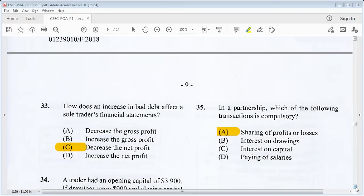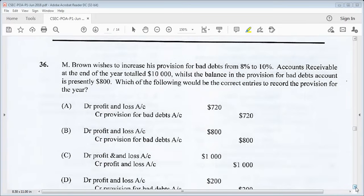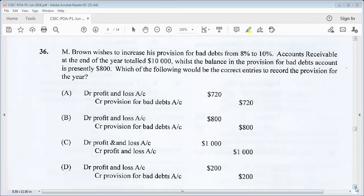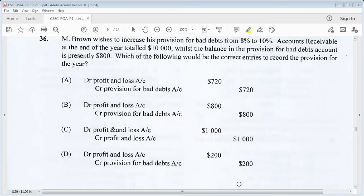Let's go on to 36. M. Brown wishes to increase its provision for bad debts from 8% to 10%. Accounts receivable at the end of the year totaled $10,000, whilst the balance in the provision for bad debts account is presently $800. Which of the following would be the correct entries to record the provision for the year? In your working out, you should get D for your answer. Debit profit and loss account $200, and credit provision for bad debts account $200.